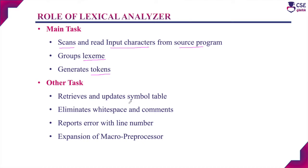During the process of producing tokens, if the lexical analyzer identifies a particular token as an identifier, it will immediately make an entry into the symbol table. Throughout the process of producing tokens for the complete source program, it will retrieve and update the symbol table frequently. This symbol table information will be used by all other phases of the compiler.